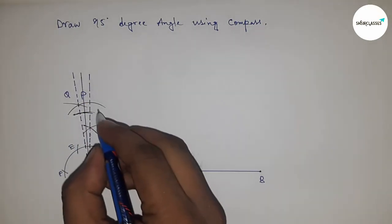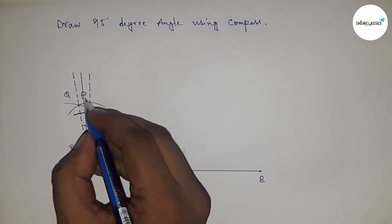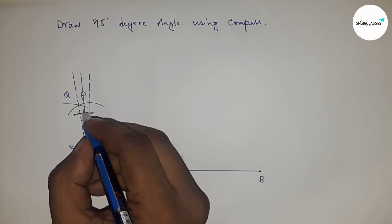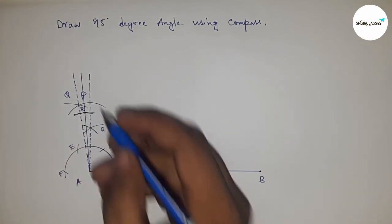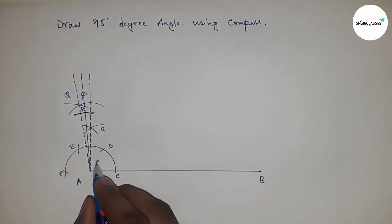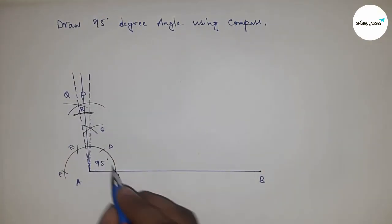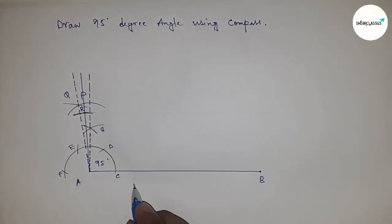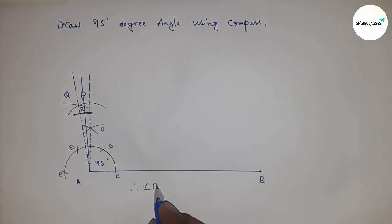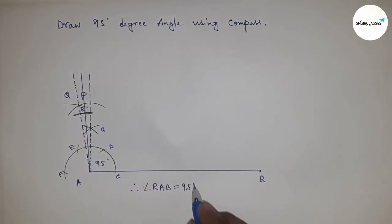This is point R. So angle RAB equals 95 degrees. Therefore, angle RAB equals 95 degrees. That's all — thanks for watching, please subscribe, like, and comment.